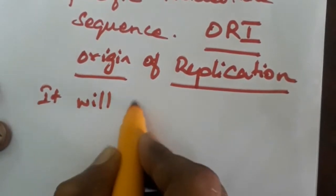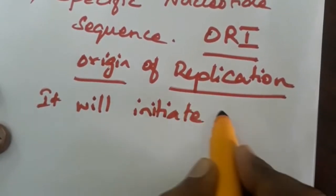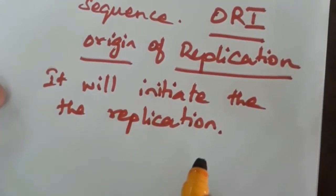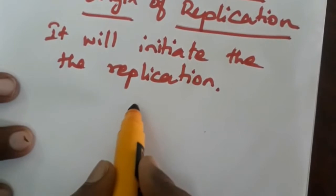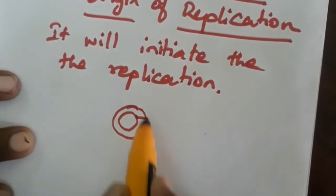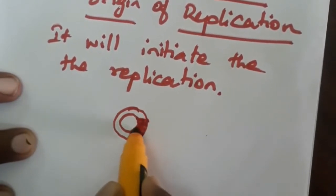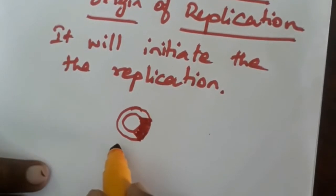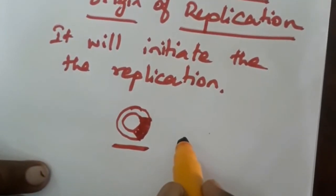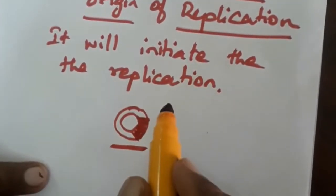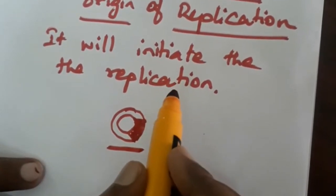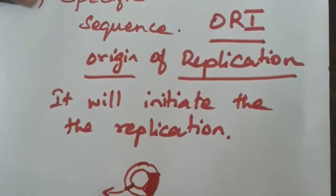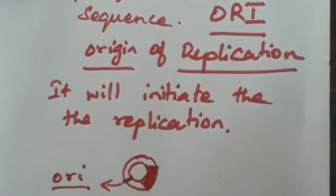This is called the ORI sequence. What is the need of this sequence? It will initiate the replication. When will the replication take place? For example, this is the plasmid — it should be a hybrid plasmid in which we have introduced our desired DNA segment. This hybrid plasmid, once after the splicing, we are introducing into the host cell. The host cell must allow the replication. For that, there is a need for an Origin of Replication Sequence in the plasmid structure itself — this is the ORI region in the plasmid.